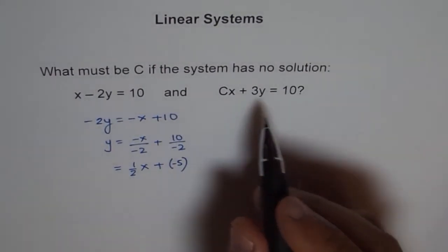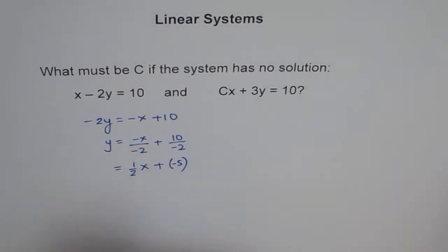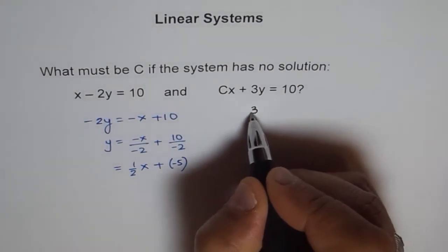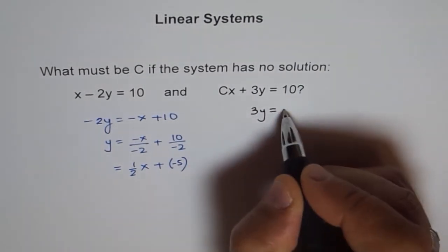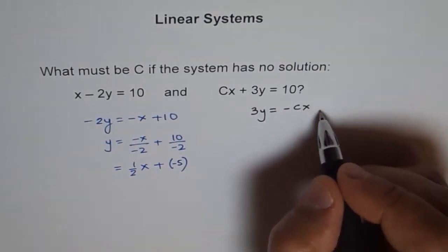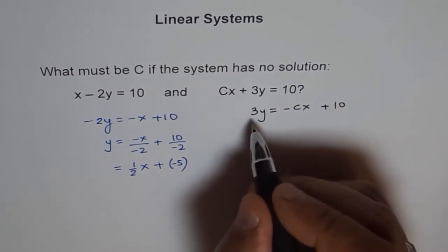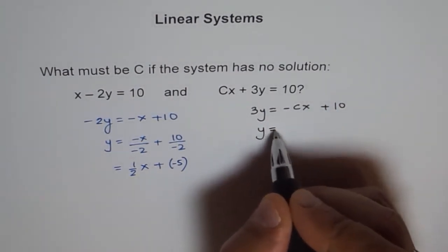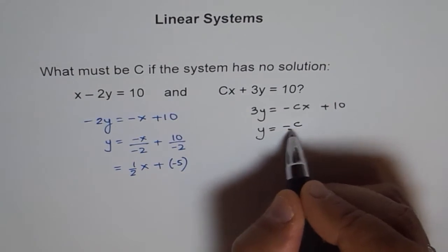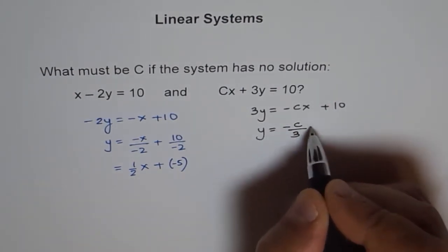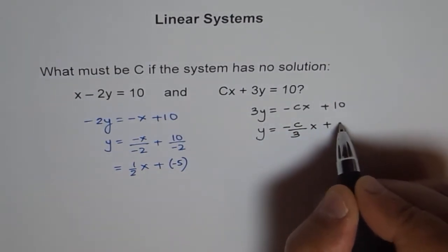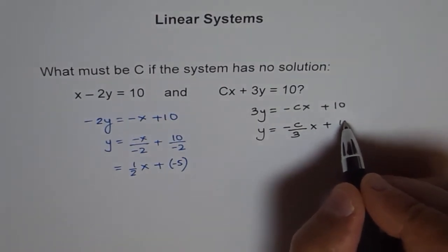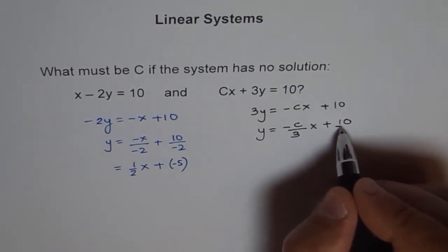Now here, if I try to isolate y, I get 3y equals minus Cx plus 10. And if I divide by 3, I get y equals minus C over 3x plus 10 over 3.